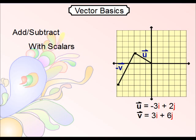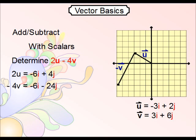With scalars, it's pretty much the same idea. So if you were asked to determine say 2u minus 4v, and this is without drawing, then we'd determine 2u, then negative 4v, and then we put them together.